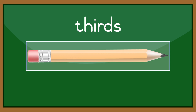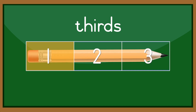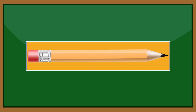In this example, the whole is divided into three parts. Those parts are called thirds. One third, two thirds, three thirds, which equal a whole.